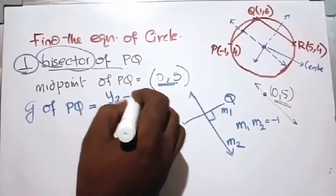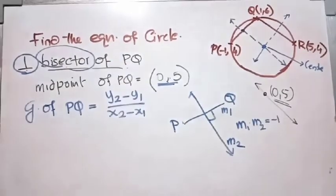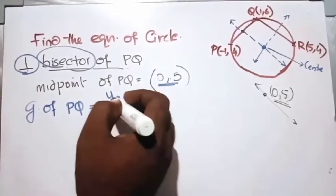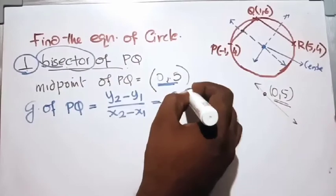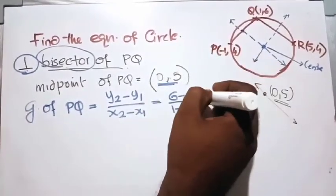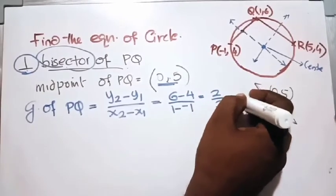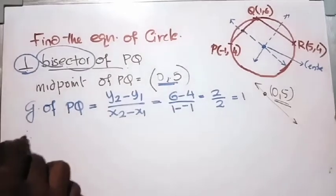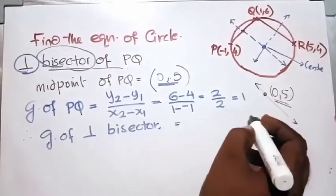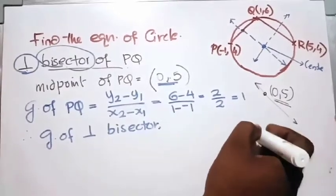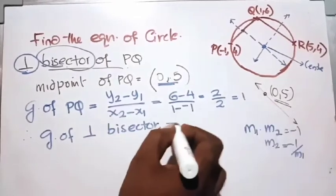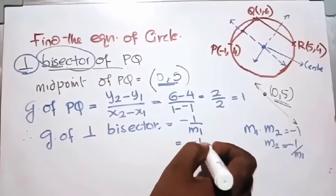The gradient of PQ is the change in y divided by the change in x. We get (6 minus 4) divided by (1 minus minus 1), which is 2 divided by 2, equals 1. Therefore the gradient of the perpendicular bisector is m2 equals minus 1 divided by m1, that is minus 1 divided by 1, which equals minus 1.